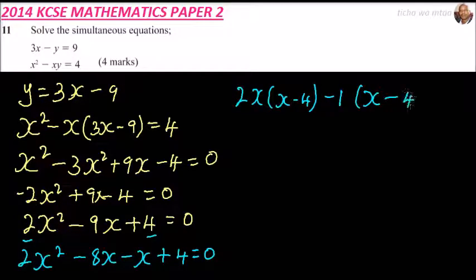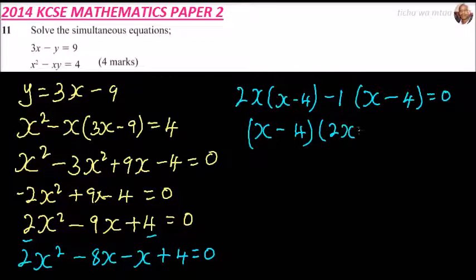Factor out minus 1, we get x minus 4. So factor x minus 4, we're left with 2x minus 1 equals 0. So x equals 4 or x equals a half.